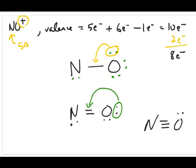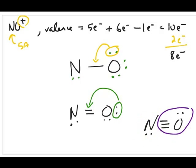To complete the drawing, the correct way to draw an ion in a Lewis structure is to put it in brackets and then put the positive charge on the outside.